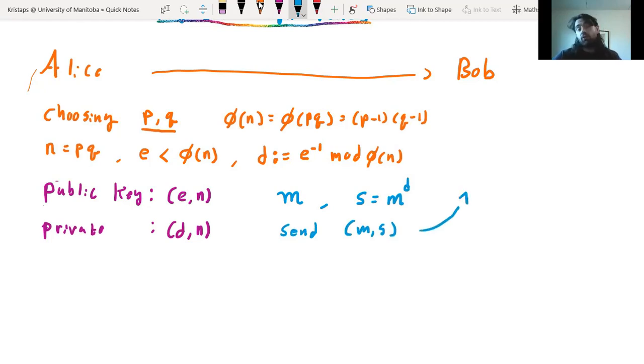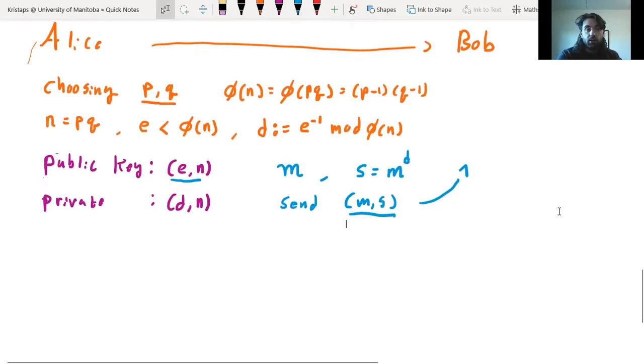So what does a potential eavesdropper know? An eavesdropper, of course, can read the public key and can read this message. And we want to make sure that an eavesdropper can't forge this sort of digital signature.